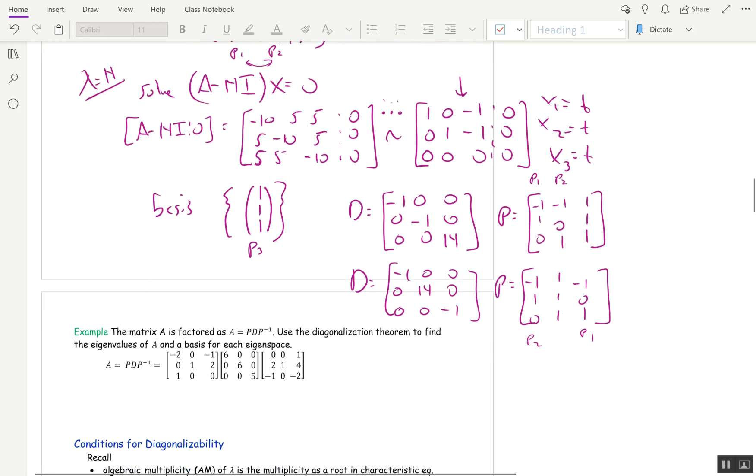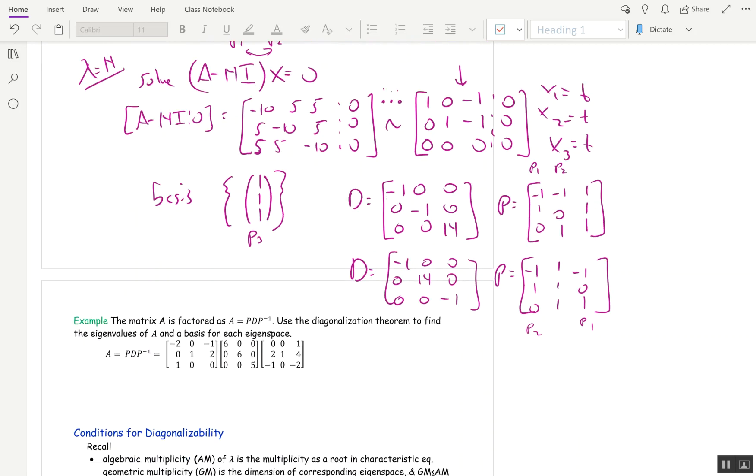All right. And then we're going to do one more example here. And here A can be written as P, D, P inverse. Use the diagonalization theorem to find the eigenvalues of A and a basis for each eigenspace. So this one's really short because all the work's been done for us. This is our P. This is our D. Now this is P inverse, but we don't even need that. We just need D and P.